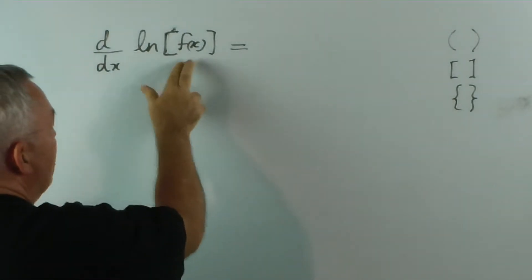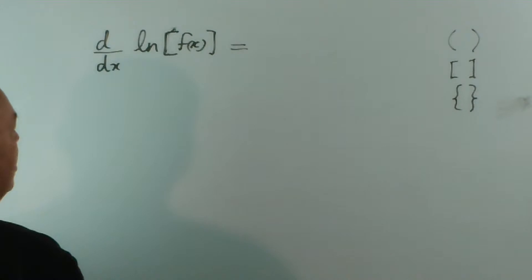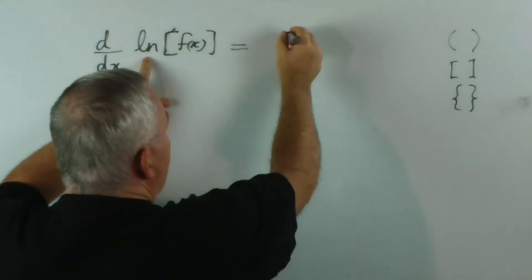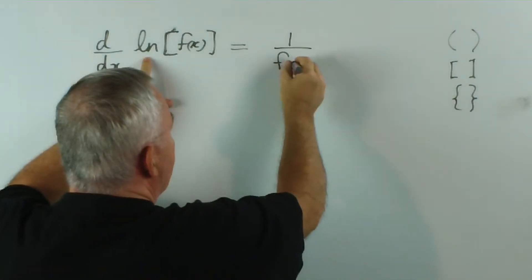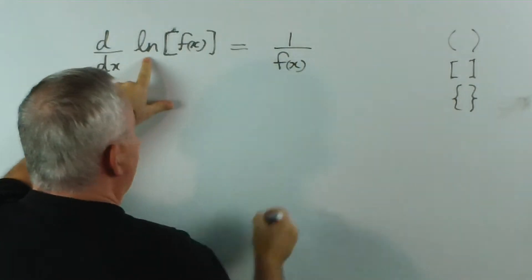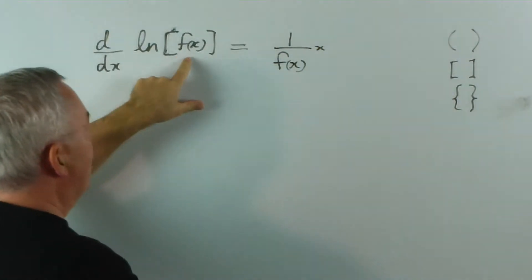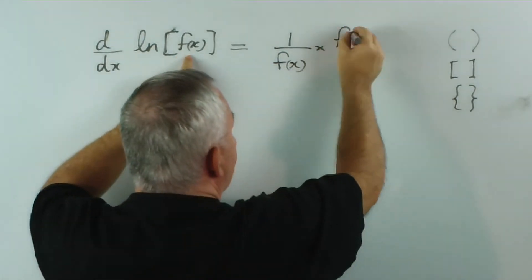So we have a logarithm of a function, and we're taking its derivative. Well, the derivative of a logarithm is 1 over whatever is inside. And then, to complete the chain rule, the derivative of f(x) is f'(x).